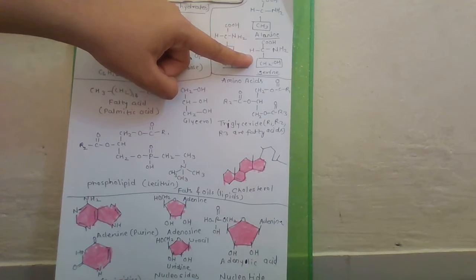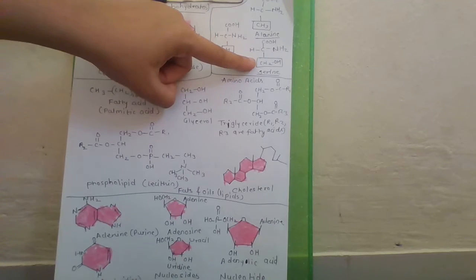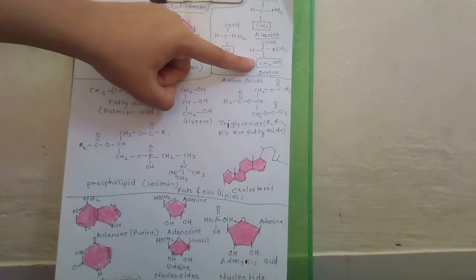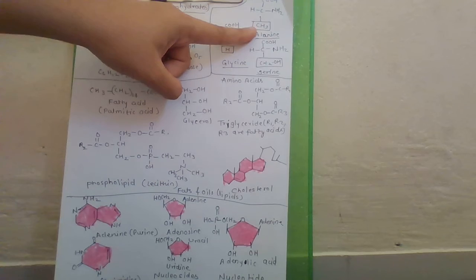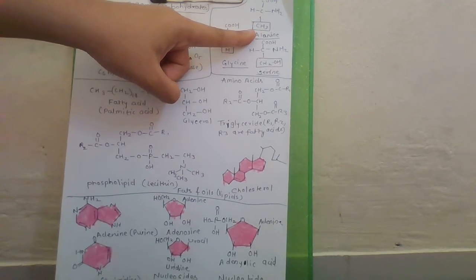If hydroxymethyl is present then it is called serine. CH2OH means hydroxymethyl. And if methyl is present then it is called alanine.